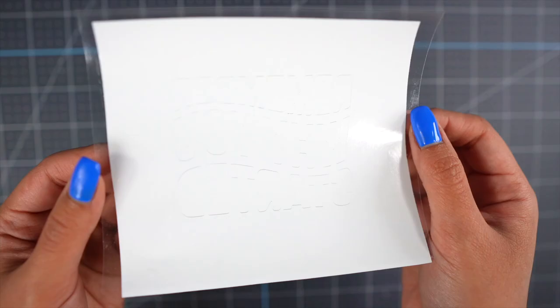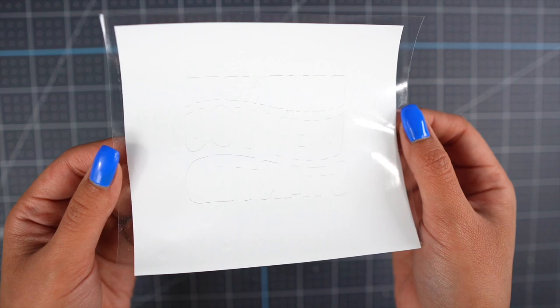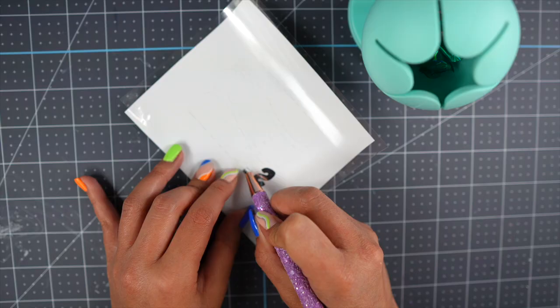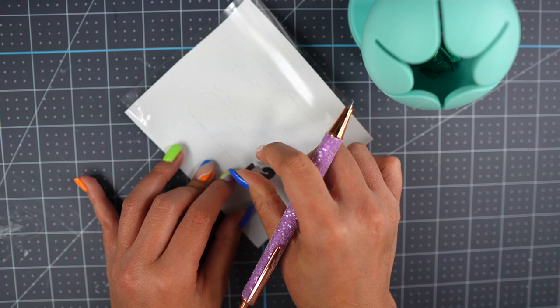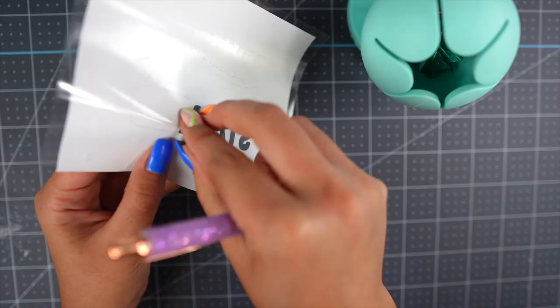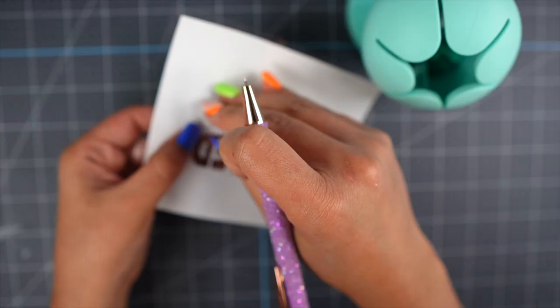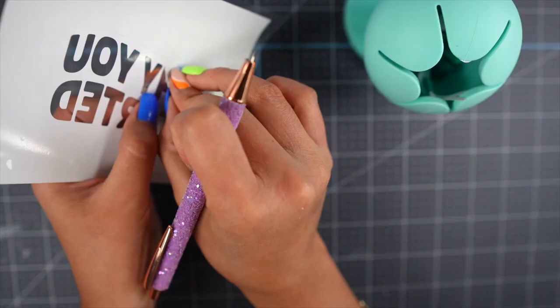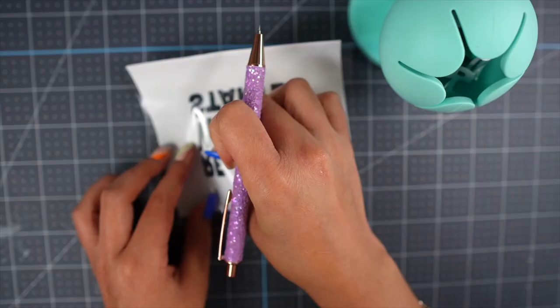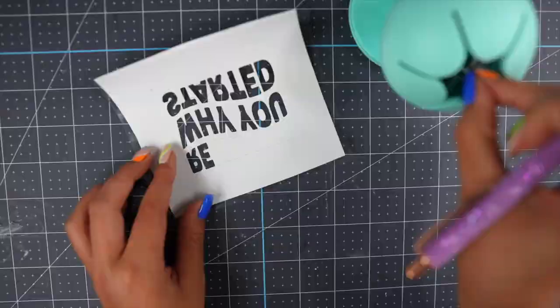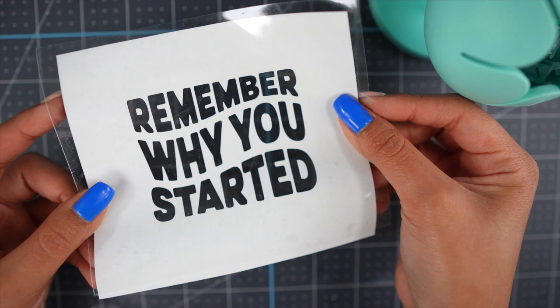Remove the paper backing. The entire piece of vinyl should be transferred onto your transfer tape. Now you can proceed weeding the opposite of what you normally would. You could also do it the other way around but in my opinion this way is a lot easier because you have it transferred and when you flip it over it should look something like this.